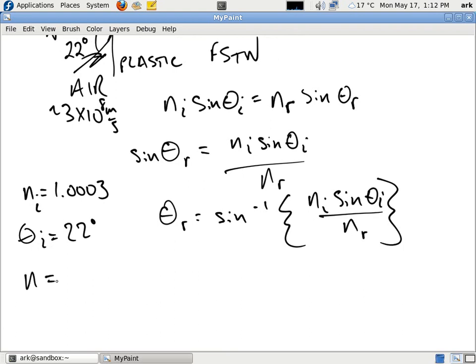The index of refraction is equal to the velocity of light, which is c, divided by the velocity in the medium. Therefore, that's going to equal 3 times 10 to the power of 8 meters per second divided by 1.9 times 10 to the power of 8, which is what the velocity of light is in this plastic. And that's going to give us an index of refraction of 1.58.